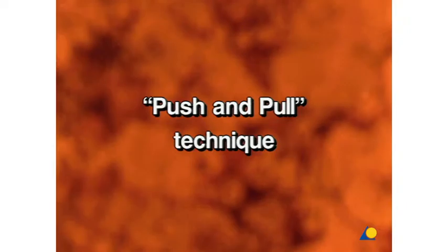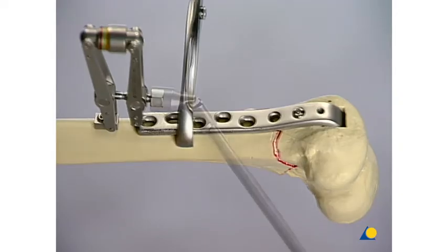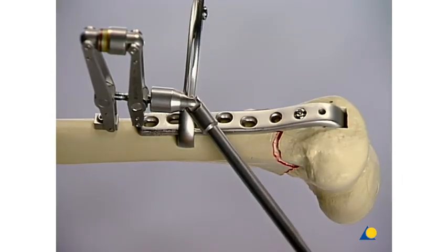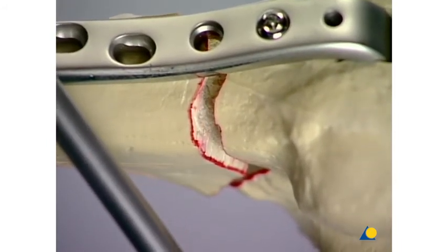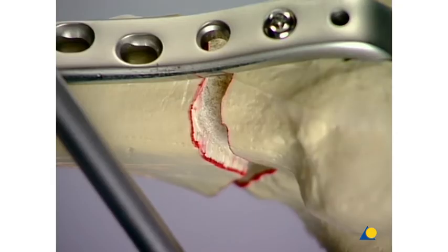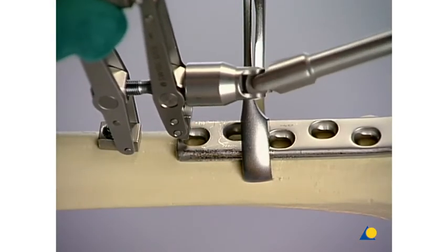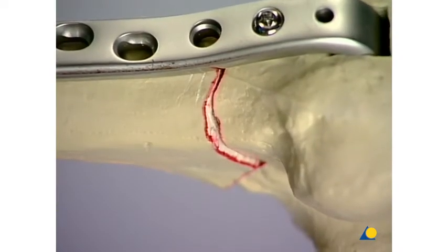Push and pull technique. For the fine adjustment of a simple fracture, the fragments are often distracted and then compressed. This can be achieved with the tension device or the bone-spreader and the bone-holding forceps. The tension device is fixed to the end of the plate with a monocortical screw, and the hook is hinged onto the end of the plate. The fracture is distracted by spreading the tension device. After turning the device and inserting the hook in the last plate hole, contraction or compression can be achieved at the level of the fracture.